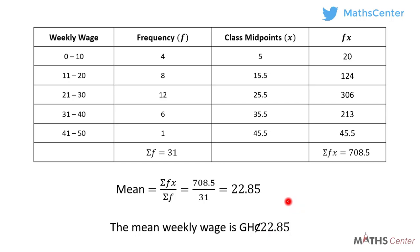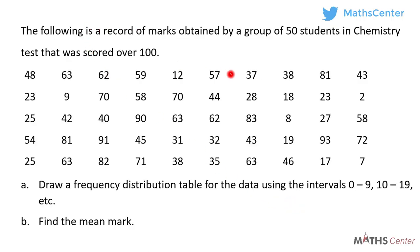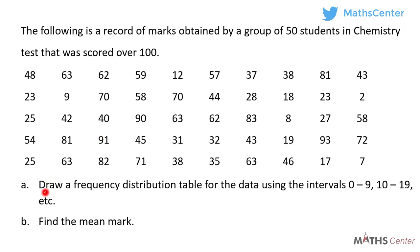Let's consider another question. The following is a record of marks obtained by a group of 50 students in a chemistry test scored over 100. We have the raw data here. The first part of the question says draw a frequency distribution table using the intervals 0 to 9, 10 to 19, etc., and use the table to find the mean mark. I have already explained how to do the tally for data like this in previous videos, so I will assume you know how to do it and proceed with the remaining part of the solution.